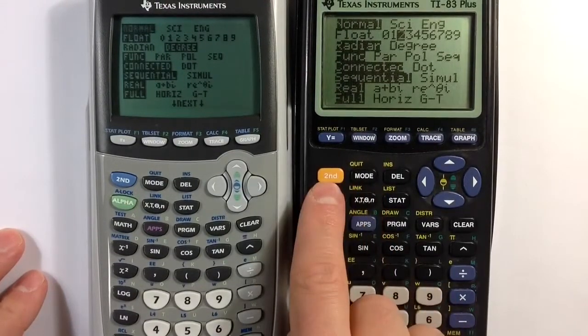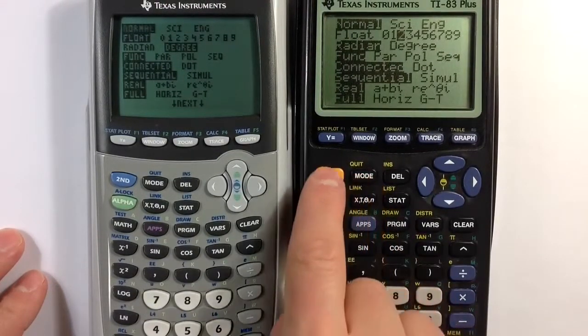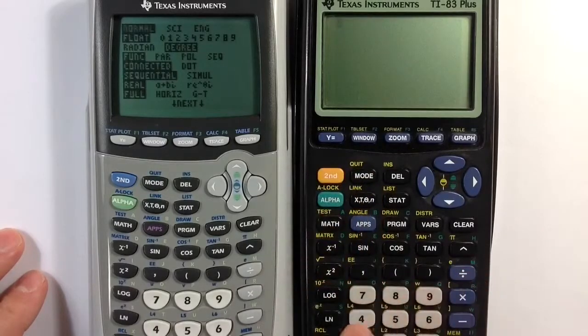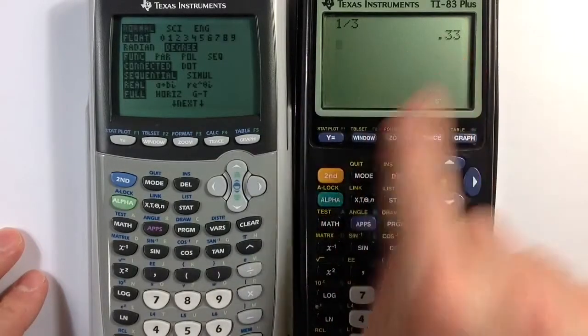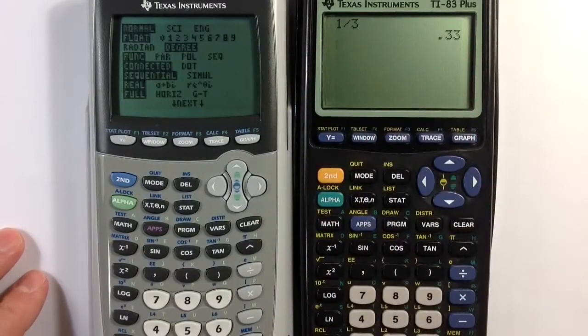Going back to the home screen, I hit second and then the mode key to quit. Let's take a look: one third. If I hit enter, it calculates one third as point three three because I asked it to round to the hundredths place, to two decimal places.